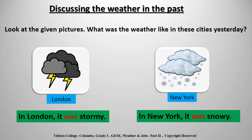This is the first topic of today's lesson: discussing the weather in the past. Look at the given pictures. What was the weather like in these cities yesterday? The first city is London, the second city is New York. How was the weather in London yesterday? In London it was stormy. If I say 'in London it is stormy,' is that correct? No, because we are talking about the weather in the past. So we should say 'in London it was stormy.'